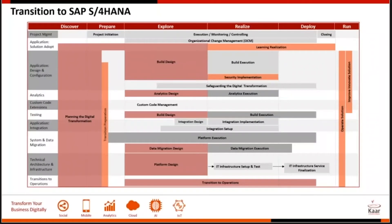The work streams are on the Y-axis and the phases on the X-axis. Each cell within this matrix represents an activity that has to be done in the project as part of a certain work stream within a particular project phase. The work stream is important because it primarily tells you the kind of resources who are going to play a part. If we can effectively put the entire list of conversion tasks into the right cell in the matrix, then the conversion is already well begun.